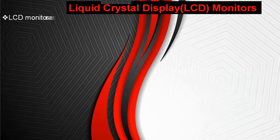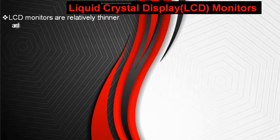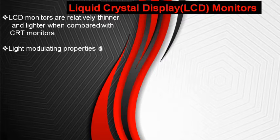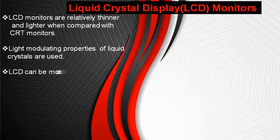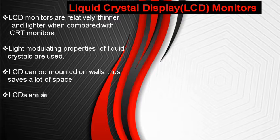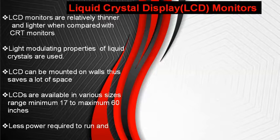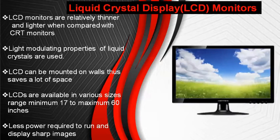The second category is liquid crystal display. LCD monitors are relatively thinner and lighter when compared with CRT monitors. Light modulating properties of liquid crystals are used in these displays. LCD can be mounted on walls, which is why it saves a lot of space. LCDs are available in different sizes, and the biggest advantage of LCDs is that less power is required to run them and they display sharp images.